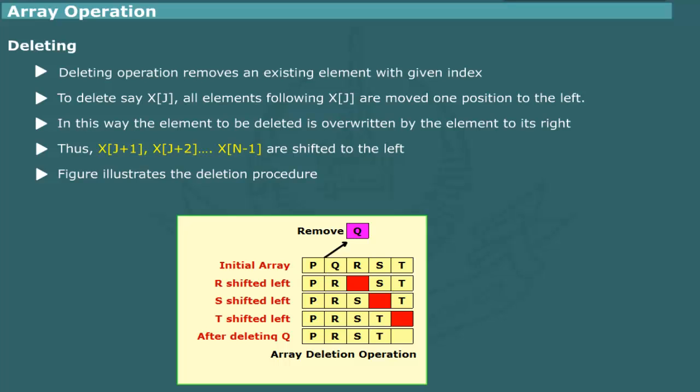Let us consider the process of deletion of an array element. The array shown initially contains letters P, Q, R, S and T. In order to delete Q, the elements R, S and T that follow Q are shifted one position to the left. Notice that the deletion of Q does not release any memory space occupied by the array. The elements R, S and T are simply reorganized.